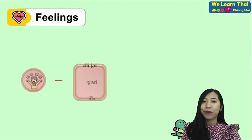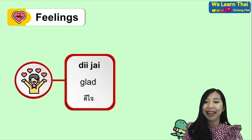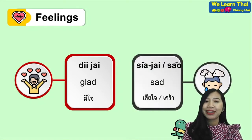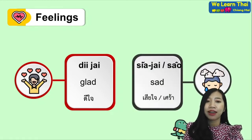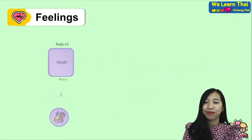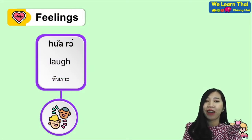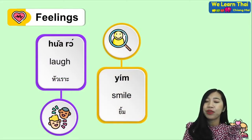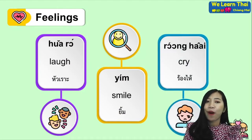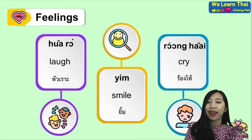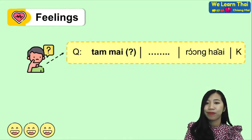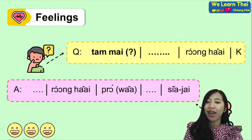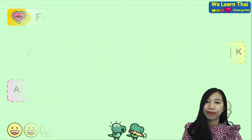For feelings, the first one we have the word 'di chai' — happy. The second is 'เสียใจ' (sia jai) — sad. For example: 'ดีฉันเสียใจค่ะ' (di chan sia jai ka).